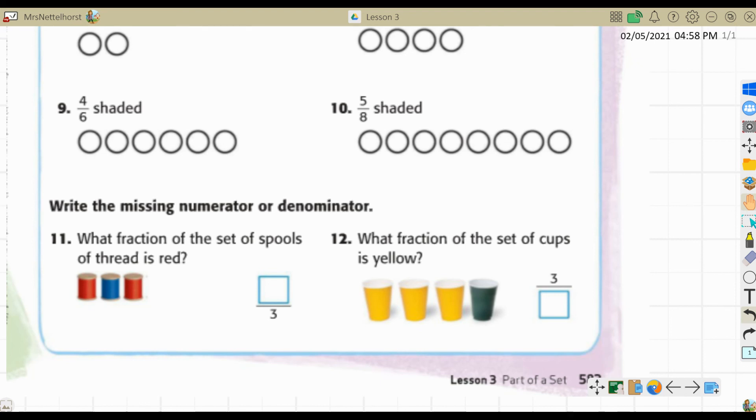Because I know with class dojo, it can be a little bit hard to color things. You can just put an X through it or just a line through it. Just to show me which ones you intended to shade. And then for problems 11 and 12, you are going to read the directions and write the fraction. Be careful because in one, your numerator is missing. The other one, your denominator is missing.